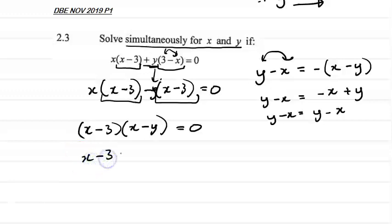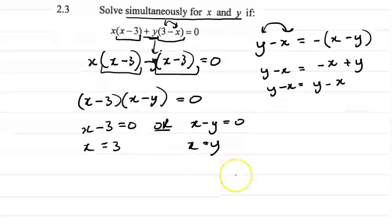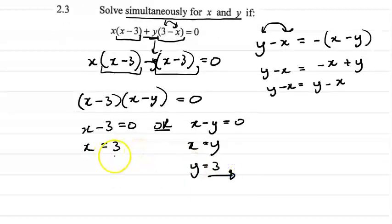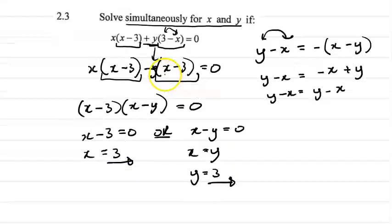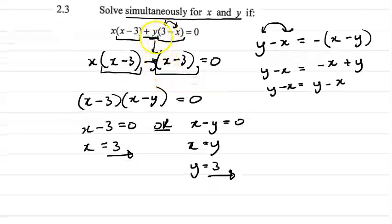And you can just take each factor and equate it to 0. So, x - y equals to 0, x equals to 3, or x equals to y. If x equals to y, that means that y is also going to equals to 3. So, once again, remember that we applied the change of sign rule there.